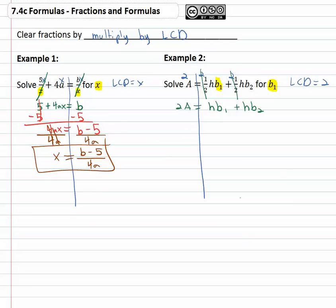We're solving for b1, so we want to get rid of whatever is added or subtracted to b1. In this case hb2 is, so we'll subtract hb2 from both sides.